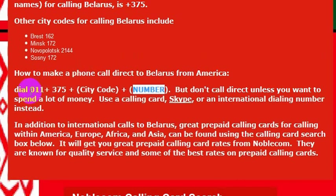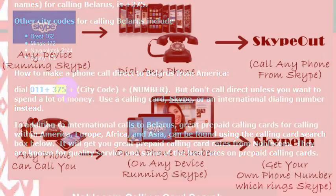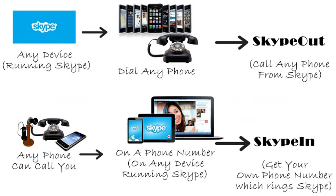The challenge with calling directly by dialing 011 plus 375 is that it could be expensive. While 375 is the country code for Belarus and will reach the country, I wouldn't really recommend calling direct — your phone company will charge you a lot of money.